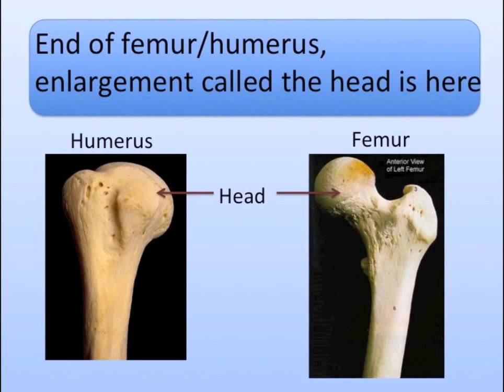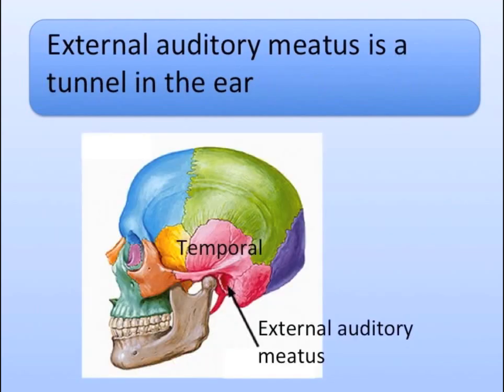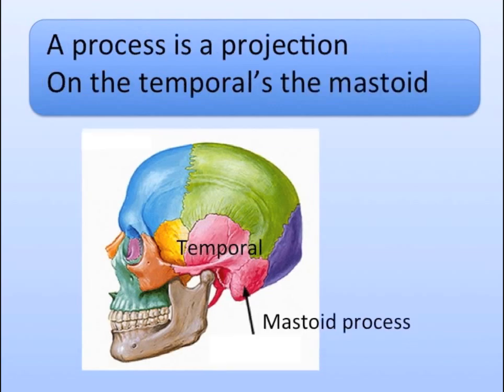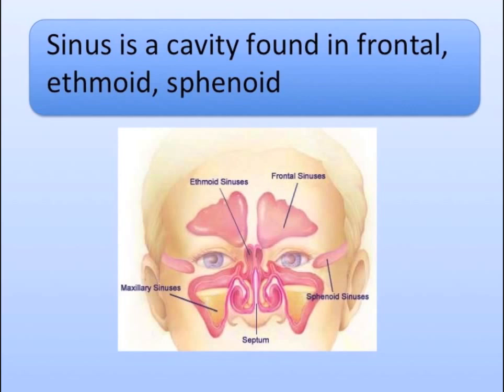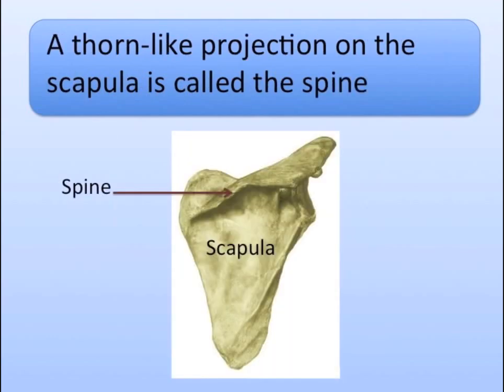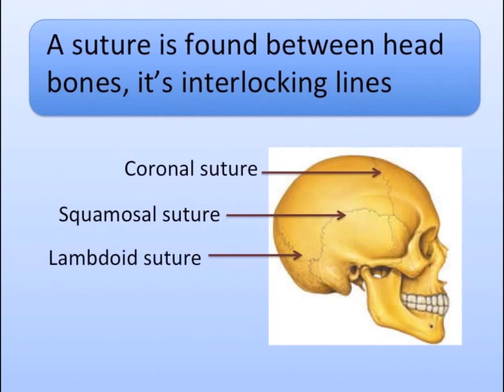The head is an enlarged part of the femur and humerus. The external auditory meatus is a tunnel in the ear. A process is a projection — on the temporals, the mastoid. Sinus is a cavity found in the frontal, ethmoid, and sphenoid. A thorn-like projection on the scapula is called the spine. A suture is found between head bones, its interlocking arms.